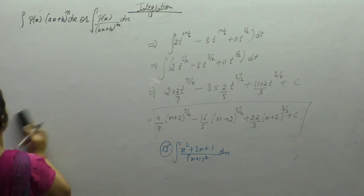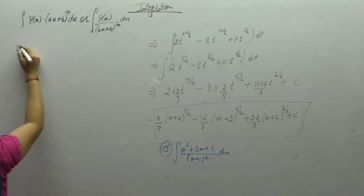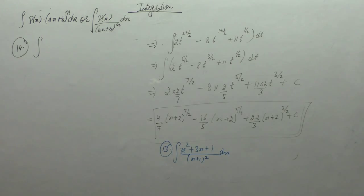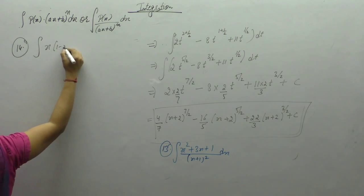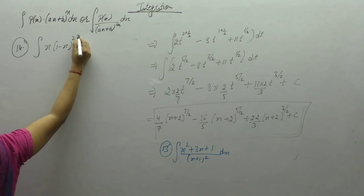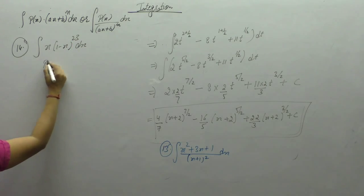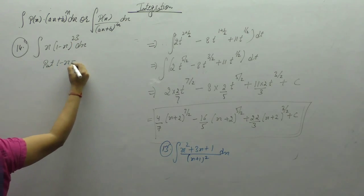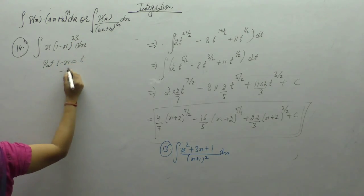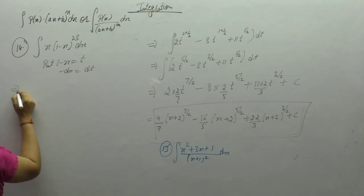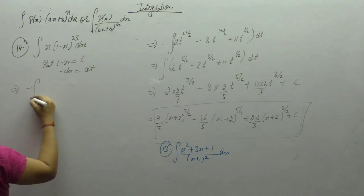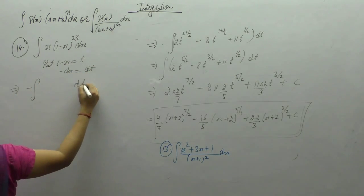Question number 14: the integral of x into (1 minus x) to the power 23 dx. Put 1 minus x as t, so minus dx is dt.